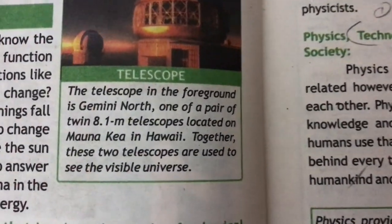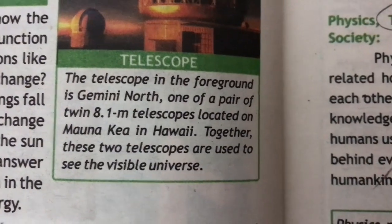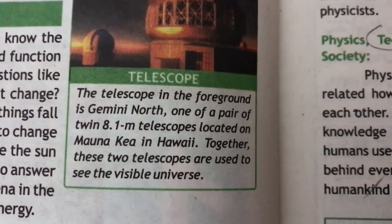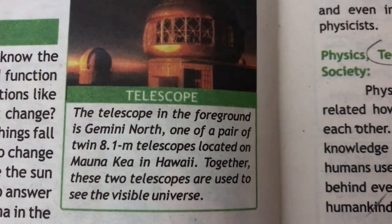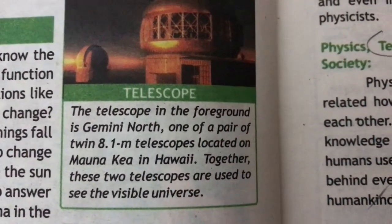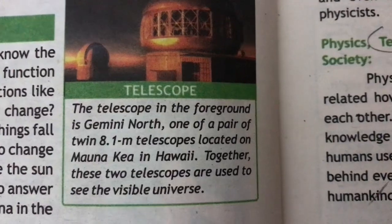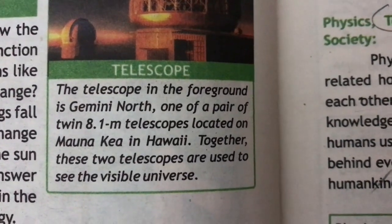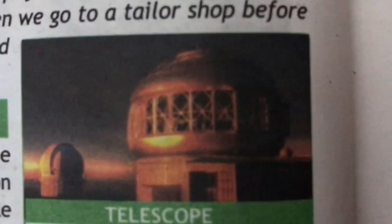Now we will discuss the telescope. The telescope in the foreground is Gemini North, one of a pair of twin 8.1-meter telescopes located on Mauna Kea in Hawaii. Together, these two telescopes are used to see the visible universe. This is the telescope shown in the picture.